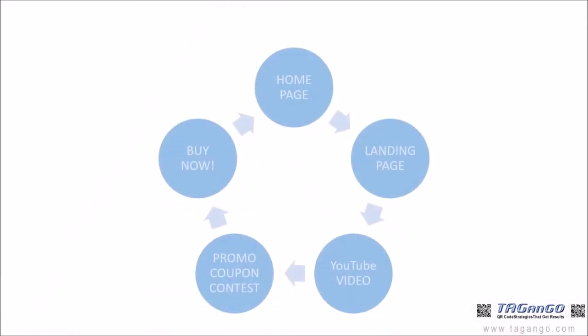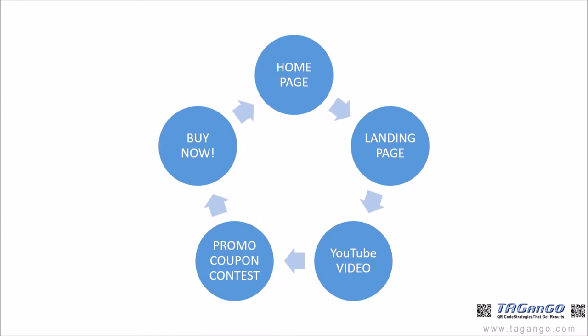The first question is: where do you link the code? To your home page? To a special landing page for each of the wines? Directly to a YouTube video? Or to a promotion, coupon, or contest link? Standard QR codes can only have one web address — it is hard-coded to the QR code. So with standard QR codes, you only get one shot at making the right choice.